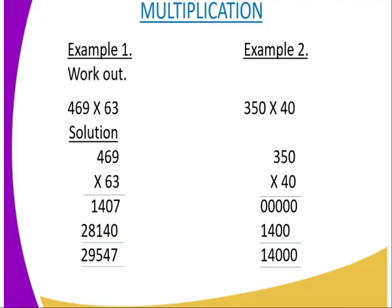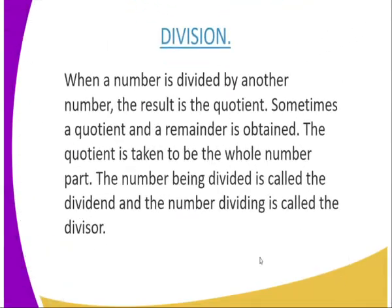You can go to multiplication, whereby you are required to multiply 469 by 63, and also 350 by 40. In our first case, 469 multiplied by 63, you arrange the numbers as we have arranged in addition, but here you are going to multiply it. So it's up to you to decide whether you start 469 to multiply first by 6, or 469 to multiply by 3. So eventually you are going to get 29,547. For the case of 350 by 40, you are just going to do the same, and eventually you are going to get 14,000.